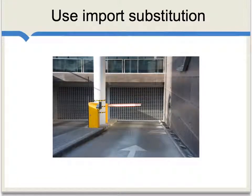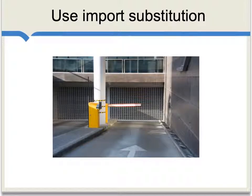Often, these countries used a strategy of import substitution — that is, keeping out some foreign products — to help build up their own national supply chain, for instance when it came to automobiles.